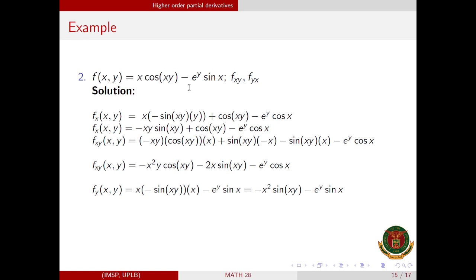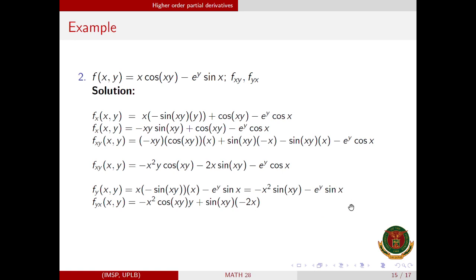Then we differentiate f_y with respect to x. We need to use the product rule. Left·(derivative of right): the derivative of sin(xy) is cos(xy) times y, since the derivative of xy with respect to x is y. Plus right·(derivative of left), giving −2x. Minus: e^y is a constant and the derivative of sin(x) is cos(x). Simplifying, we have this expression — and as we can see, f_xy is equal to f_yx.